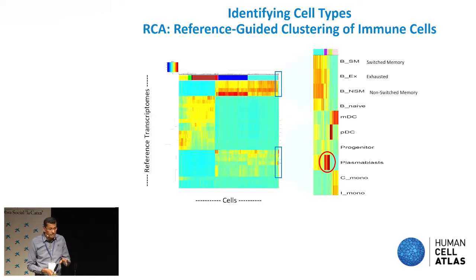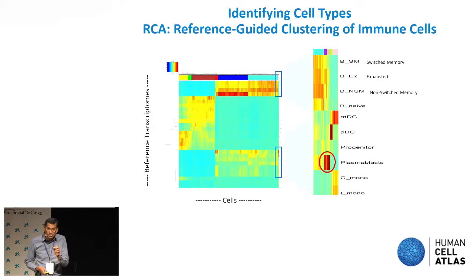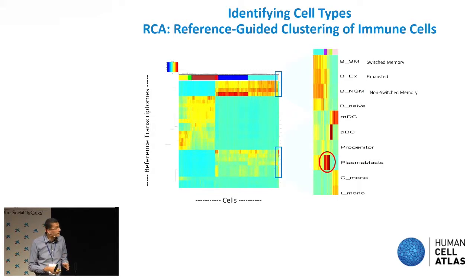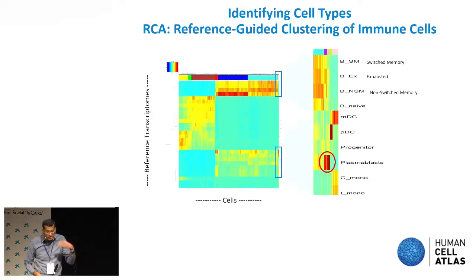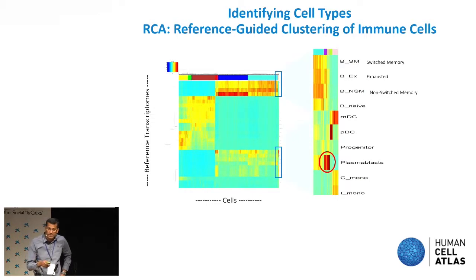Once you generate all this data, you need to robustly reduce batch effects and identify cell types, then do downstream analysis. We have an algorithm called RCA — Reference-Based Clustering of Cell Types — where each column is a cell and each row is a reference transcriptome. Cells cluster very cleanly, even rare cell types, by the reference transcriptome. It's easier to cluster by reference than to cluster de novo. As the Human Cell Atlas defines all cell types in the human body and their reference transcriptomes, these reference-guided clustering methods will become more and more powerful.